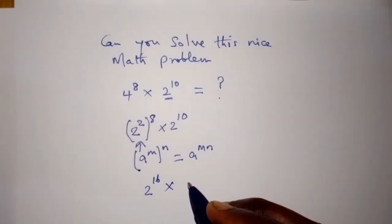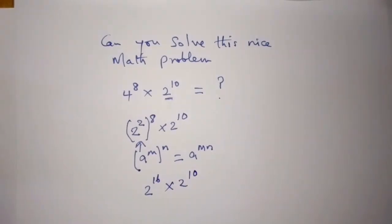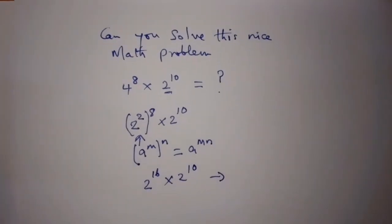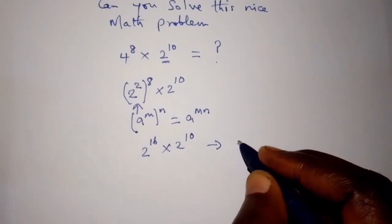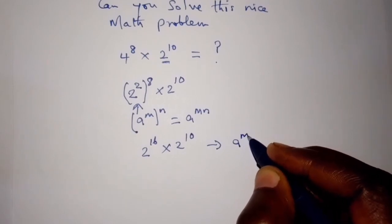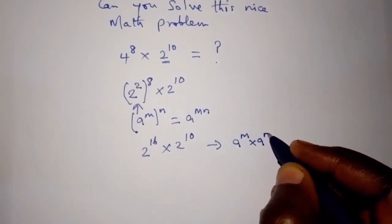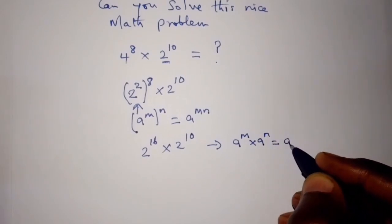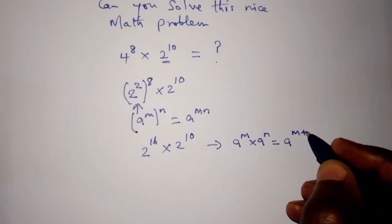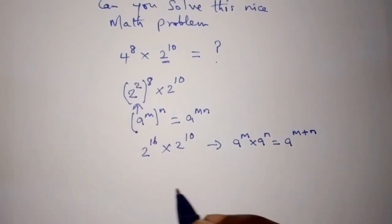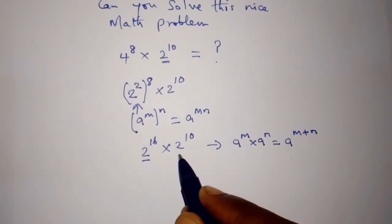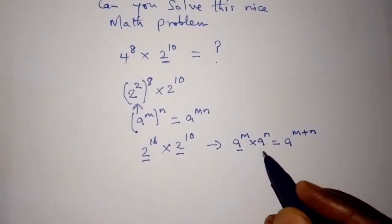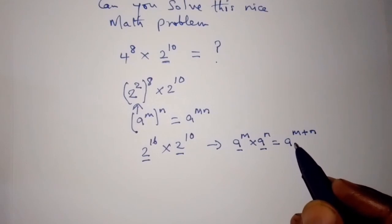We then multiply by 2 to the power of 10, and we apply the law of indices that states that a power m times a power n is equal to a power m plus n. Because we now have a common base of 2, we can apply this law directly.